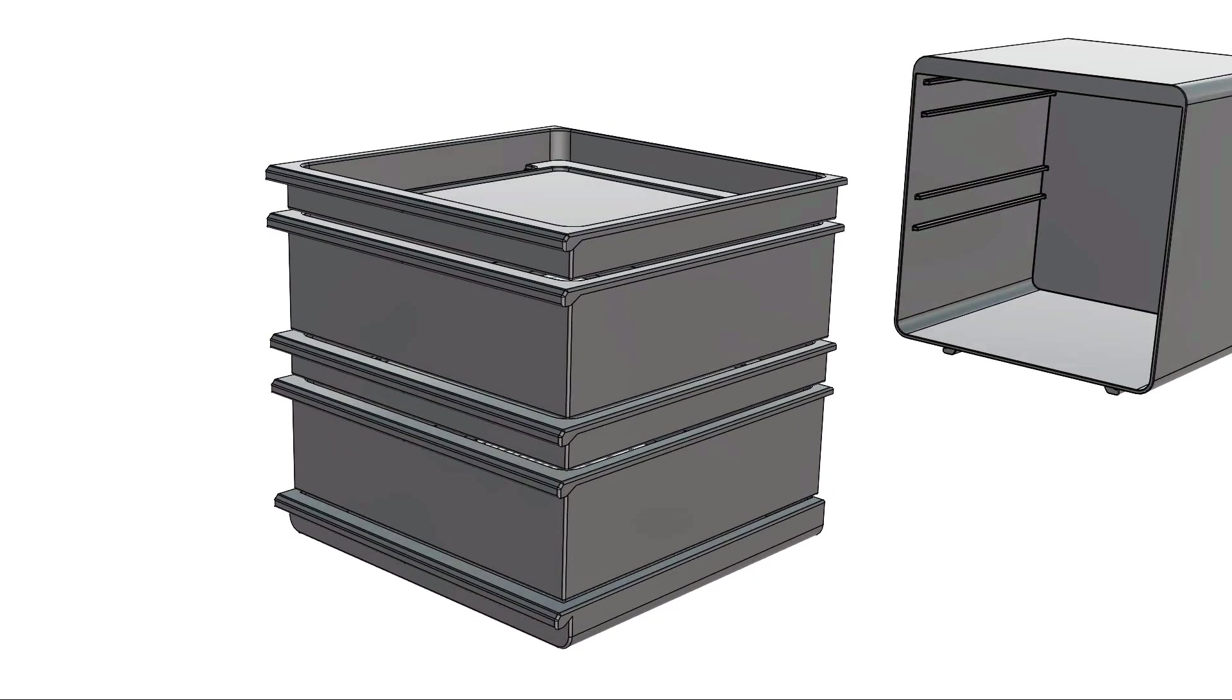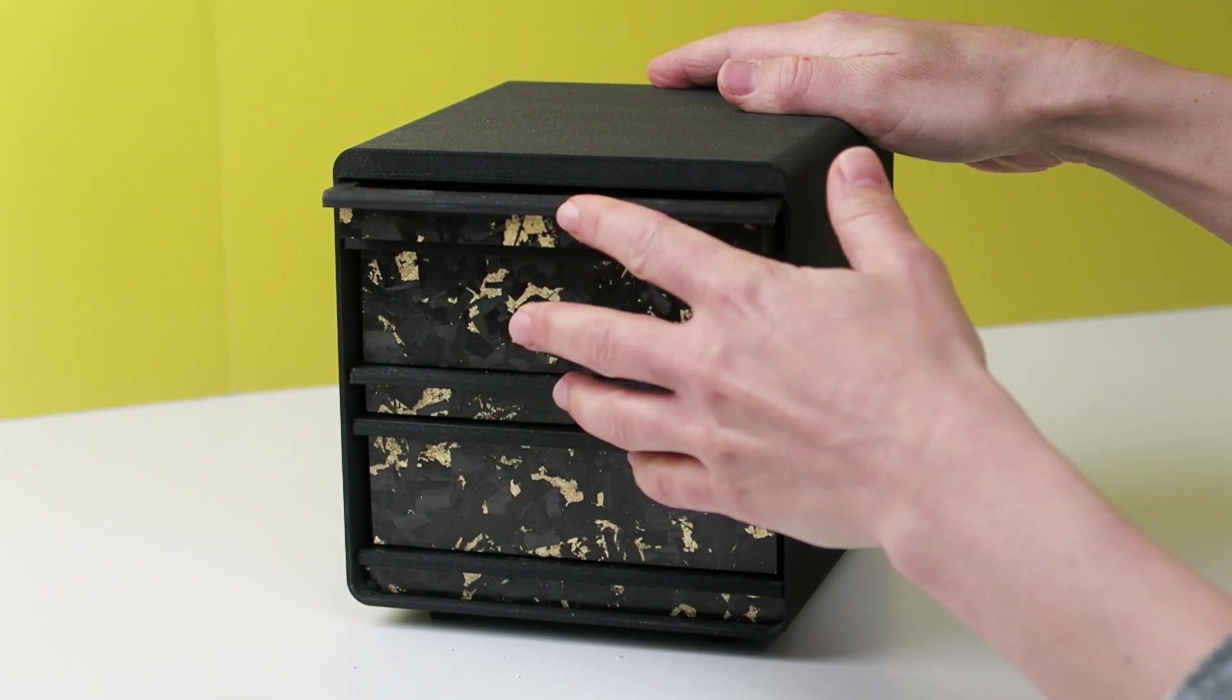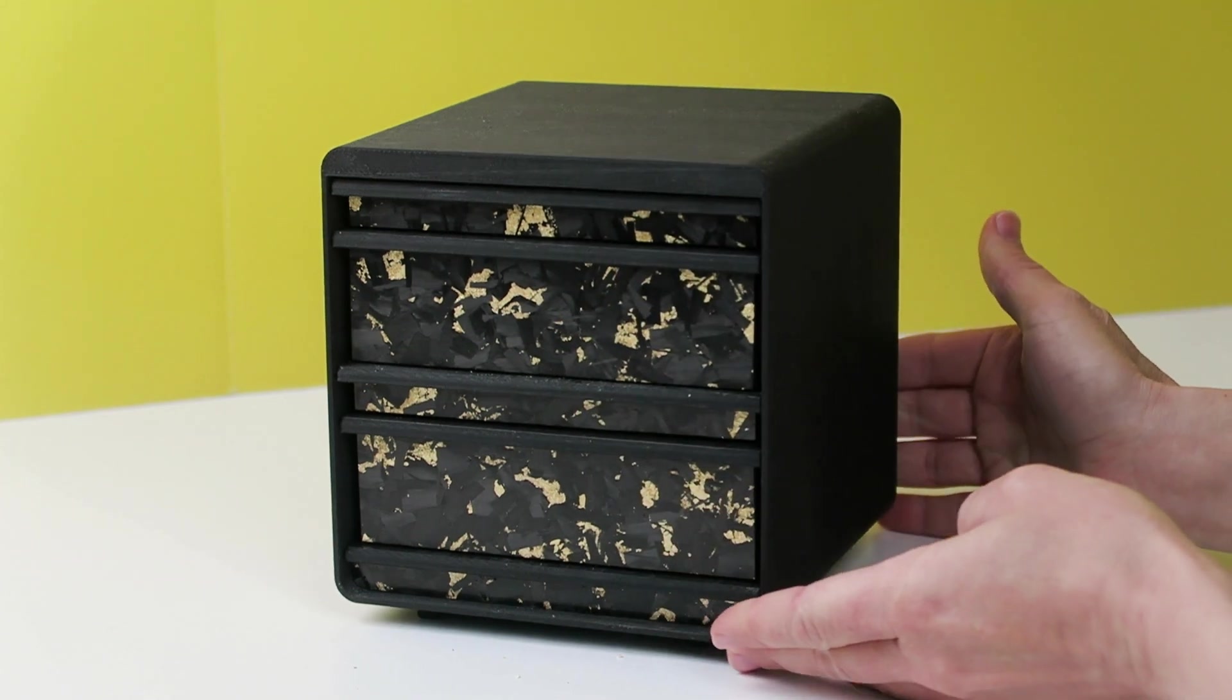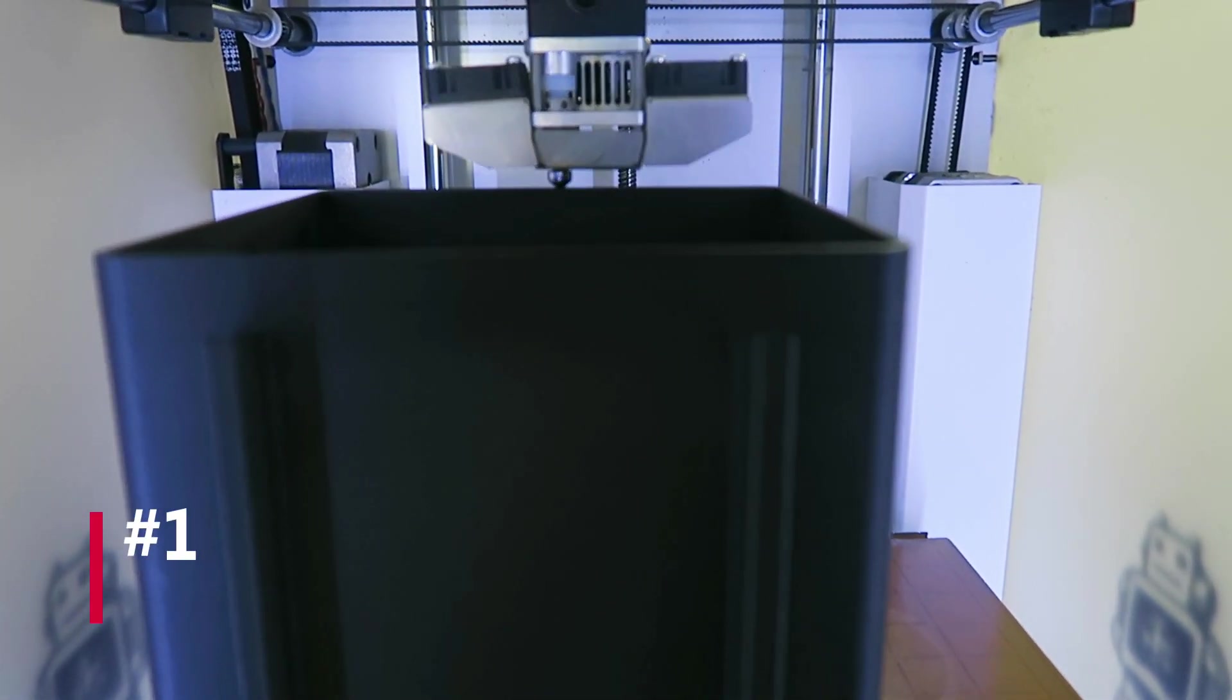The mealworm farm design is modular, self-sorting, and looks beautiful with gold-forged carbon fiber. Step 1: 3D print the trays and housing.